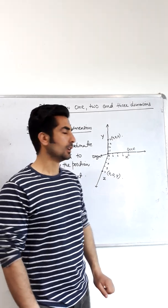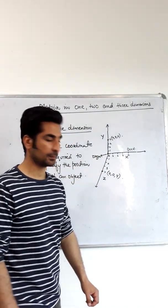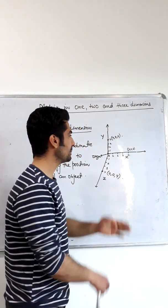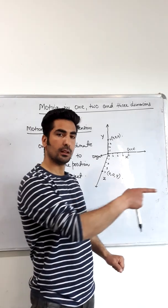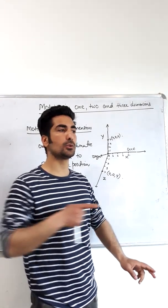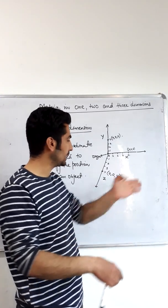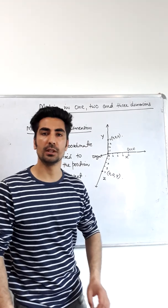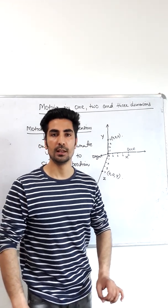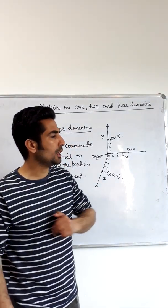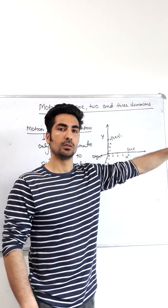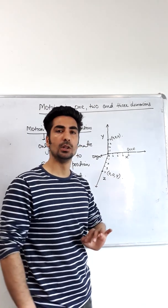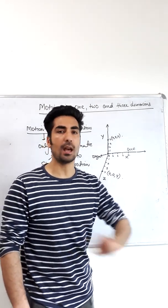So that is about motion in one dimension. Now coming to examples: if someone is moving on a straight road in one direction, then that motion is said to be one-dimensional motion. If you are in a car going along a straight road in a single direction, your motion will be one-dimensional motion, also called motion in a straight line.